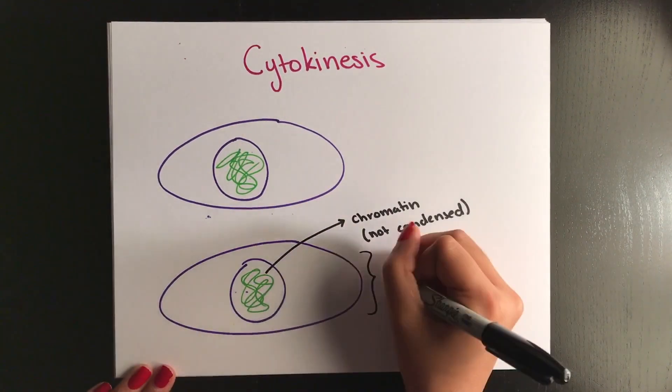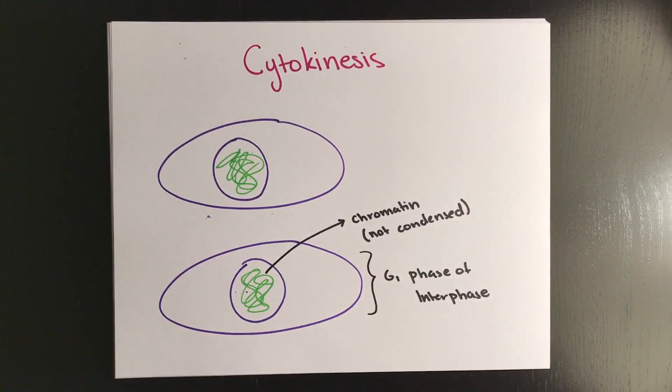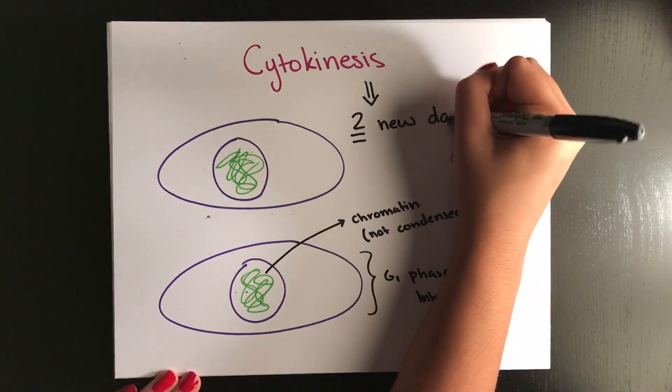During cytokinesis, this is when the two new daughter cells form and begin interphase. Now we're going to move on to meiosis.